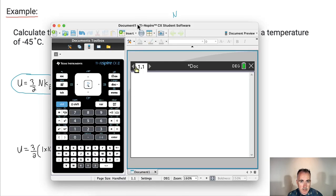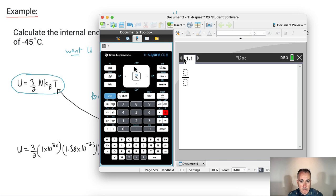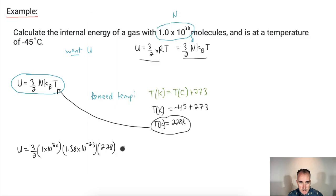I'm going to need a calculator for this, and I'll just multiply these. So I'll first start off with a nice pretty fraction, 3 over 2, and I'll multiply that by 1 times 10 to the 30, all that times 1.38 times 10 to the minus 23, and all that times 228. I end up with an answer of 4.719 times 10 to the 9.